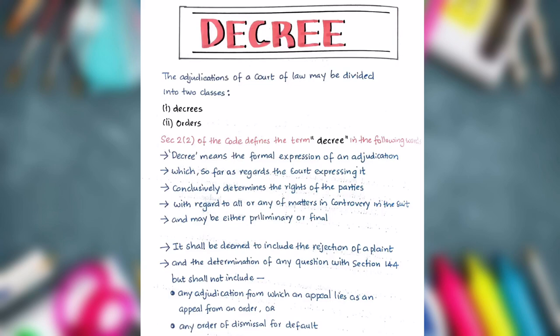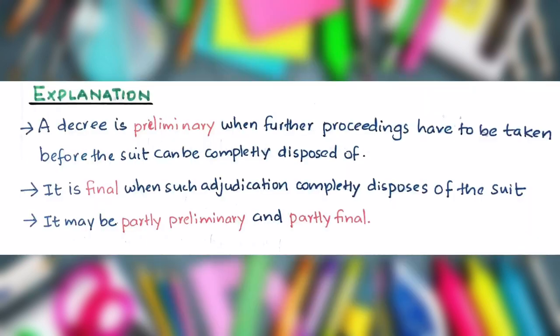It shall be deemed to include the rejection of a plaint and the determination of any questions within Section 144, but shall not include any adjudication from which an appeal lies as an appeal from an order, or any order of dismissal for default. The explanation to this section reads: a decree is preliminary when further proceedings have to be taken before the suit can be completely disposed of, and it is final when such adjudication completely disposes of the suit. It may be partly preliminary and partly final.